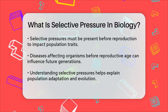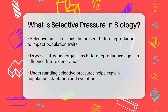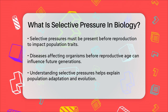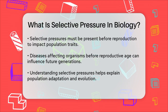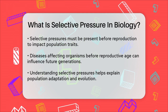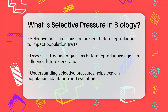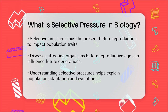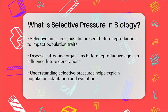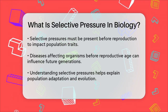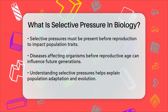Selective pressures must act before reproduction to have an effect on the population. This means that the pressures need to be present throughout an organism's life, or at least before it reproduces. For instance, diseases that affect an organism before it reaches reproductive age can significantly influence the traits that are passed on to the next generation. In summary, selective pressure is the driving force behind natural selection, influencing which traits become more common in a population based on various environmental, biological, and even human-induced factors.